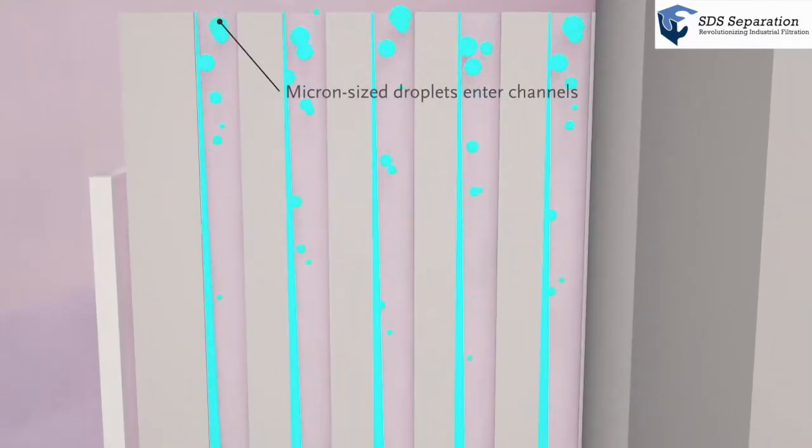The small droplets are centrifugated to the channel wall. Here they form a film.